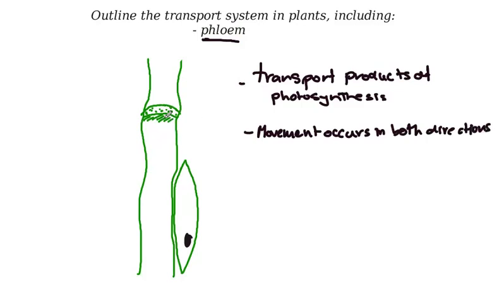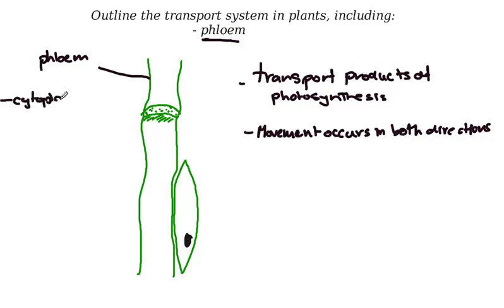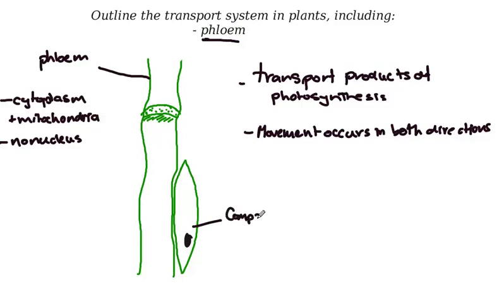Phloem cells are a little bit different — they have lost some of their cell components. However, they are still living. They still have cytoplasm and mitochondria, but they have no nucleus. That is the job of the companion cell. The companion cell helps to keep the phloem tissue alive and has a nucleus, so it helps to support the phloem tissue.